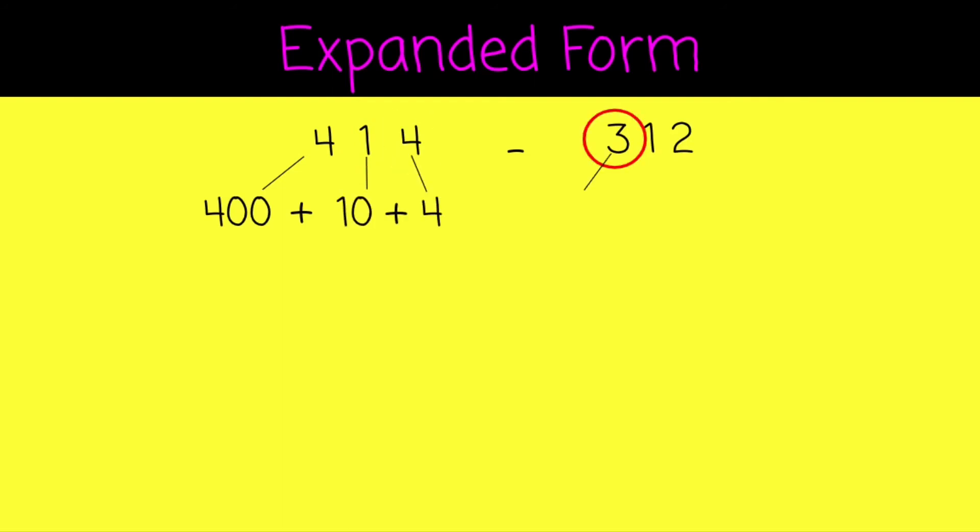That 3 is in the hundreds column, it's 300. This 1 is again in the tens column, it represents 10. And that 2 is 2. Remember your addition symbol when writing in expanded form.